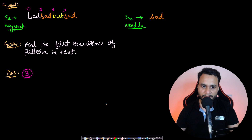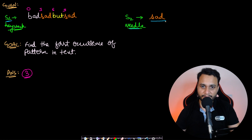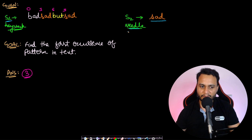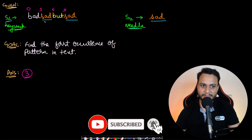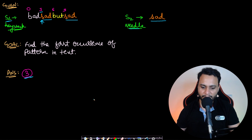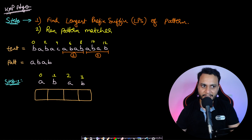Let's look at an example. String s1 is the haystack and string s2 is the needle. Let's say the needle is 'sad' and the haystack is 'bad sad but sad'. The size of the haystack should be greater than or equal to the size of the needle, otherwise you cannot find it. There are two occurrences of 'sad' but we want the first one, which starts at index 3, so the answer is 3.